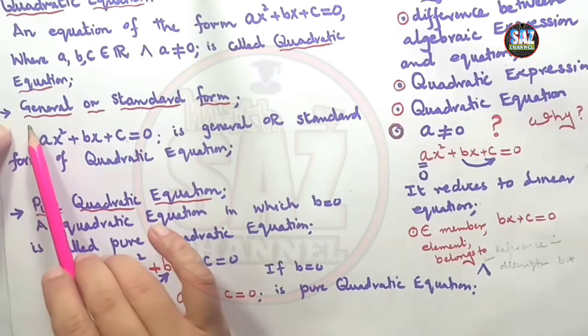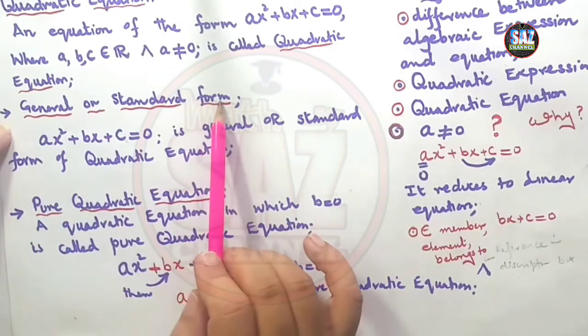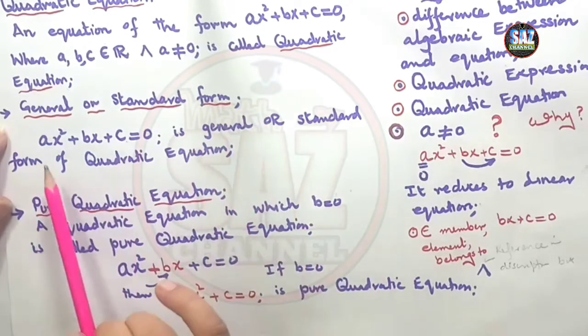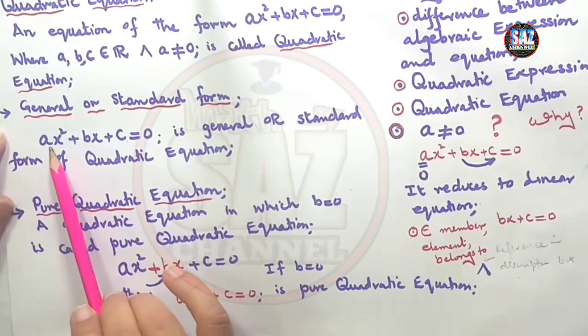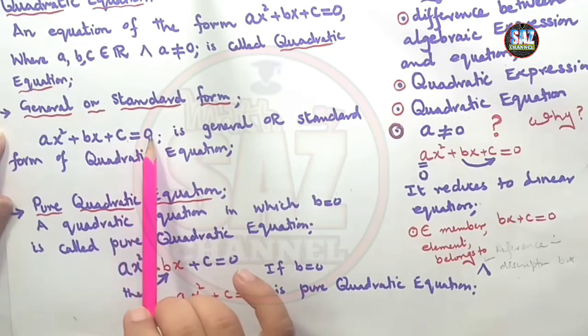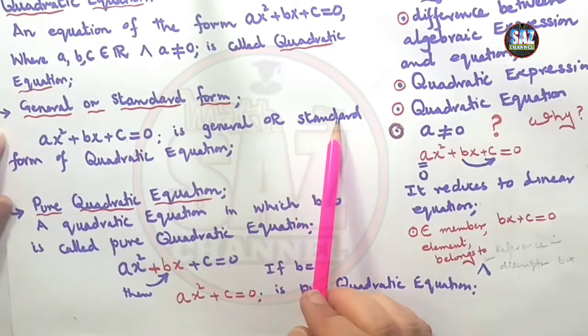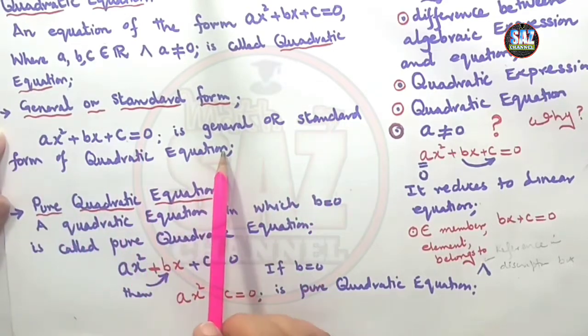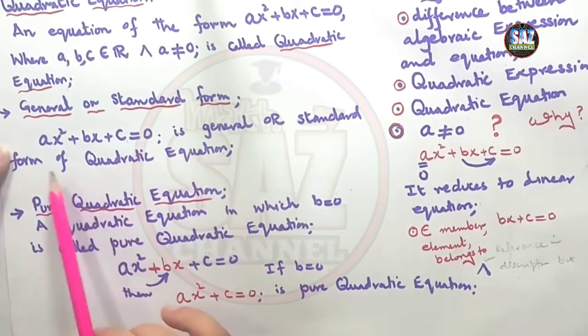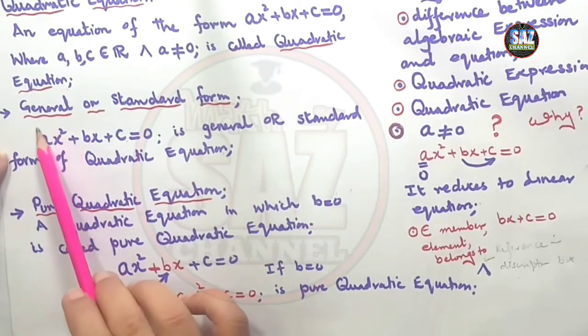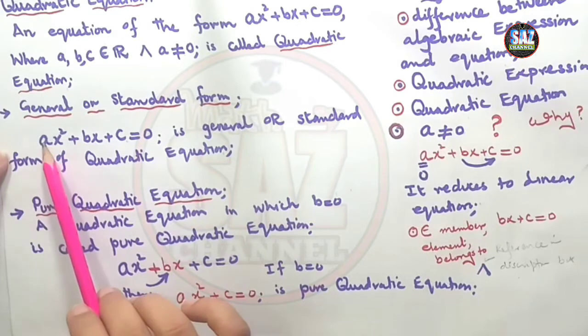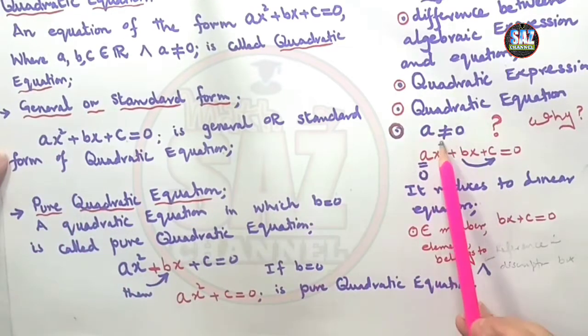Then the next thing is the general or standard form of quadratic equation. An equation of the form ax²+bx+c=0 is general or standard form of quadratic equation. Here it is important that the coefficient of the square term, which is a, should not be equal to 0.